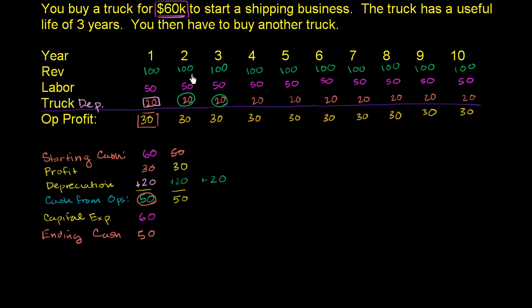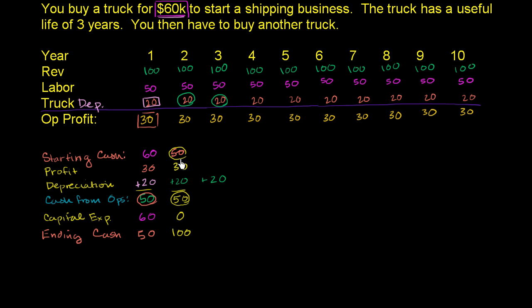We have a very steady business. But this year I have no capital expenditures — I'm using the same trucks from last year. So our ending cash: starting cash was $50,000, we have $50,000 from operations, and with no capital expenditures, our ending cash is $100,000. Hopefully that gives you a sense of why we add back depreciation when we figure out the cash from operations and how it all works out in the cash flow statement.